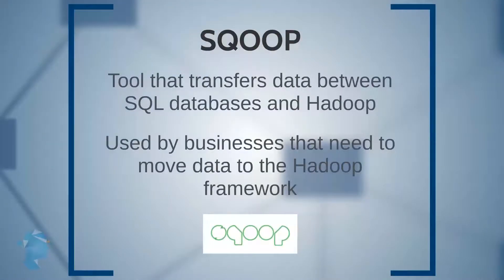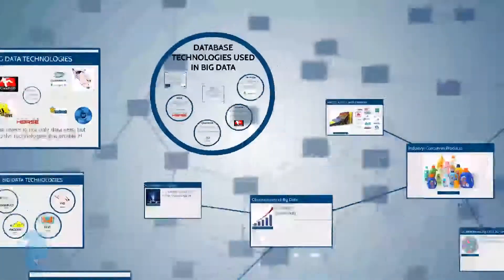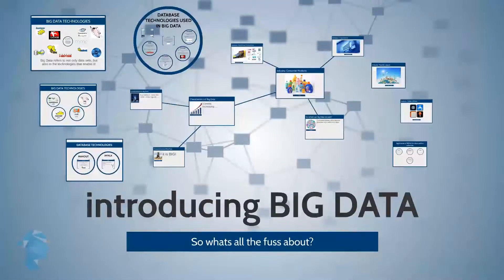Sqoop, as the name suggests, is a tool that transfers data between traditional SQL databases and Hadoop. It is used by many businesses that need to move data stored in their existing databases to the Hadoop framework. For example, Microsoft uses a Sqoop-based connector to transfer data from Microsoft SQL Server databases to Hadoop and back.